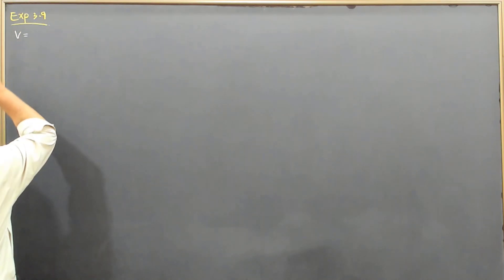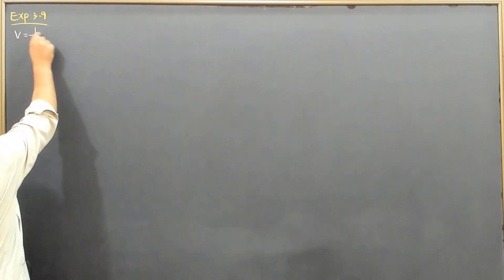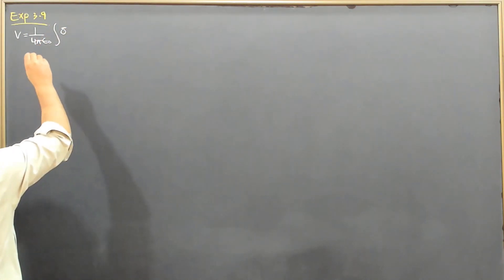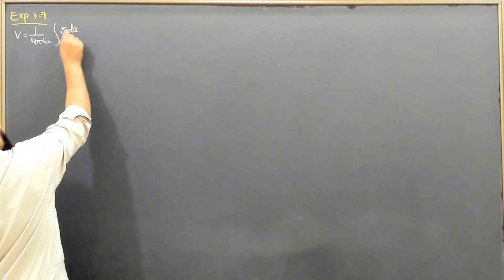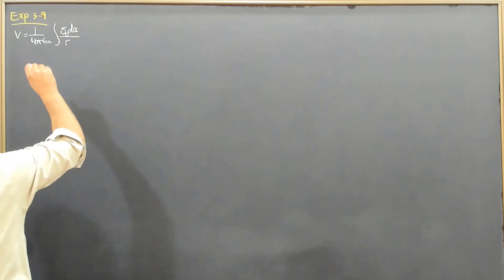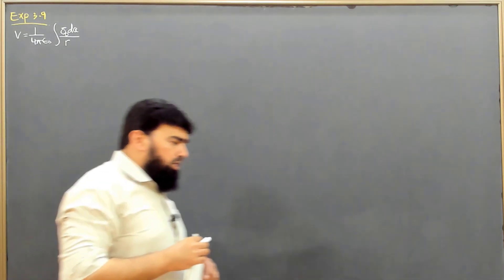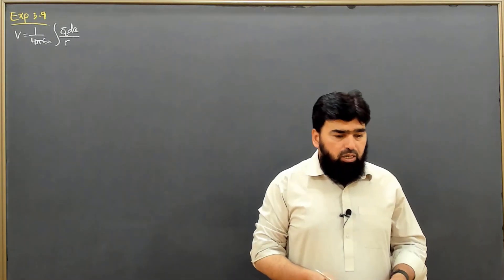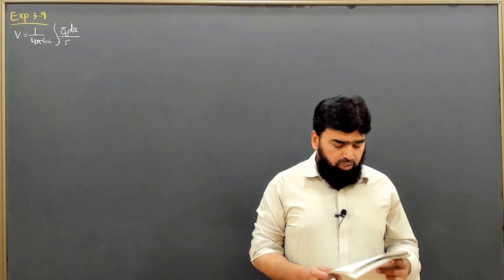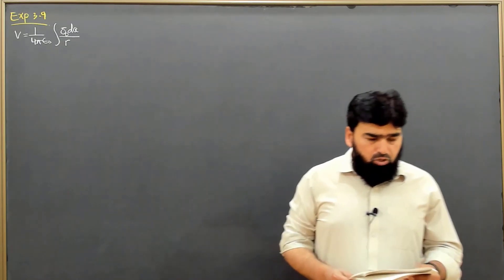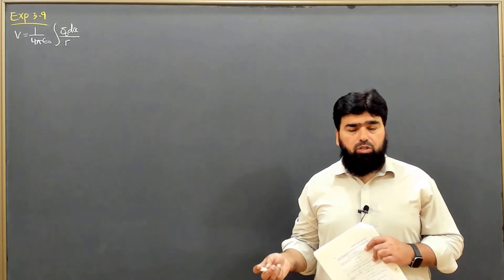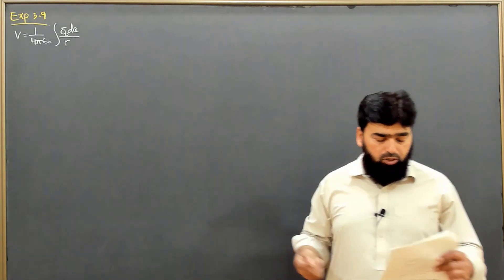One way is to write V equals 1 over 4*pi*epsilon-naught, the integral of sigma-naught dA over r. This we have done already in the earlier chapters and this way we can solve this problem. But here it is easier to solve with the help of Legendre polynomials. So we are having basically a situation in which we will write the terms for the inside of the sphere and for the outside of the sphere.